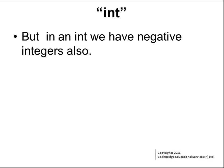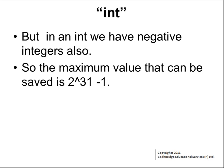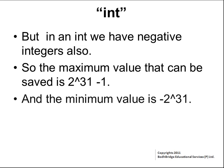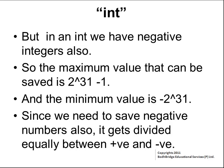In a signed integer, we should be able to save negative integers also. So the total range in which we can save numbers becomes half. Hence, the maximum value that can be saved in an integer of 32 bits is 2 to the power of 31 minus 1, and the minimum value is minus 2 to the power of 31. In total, we can save 2 to the power of 32 different numbers, divided equally between positive and negative.